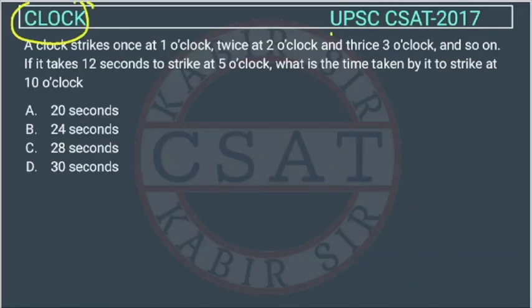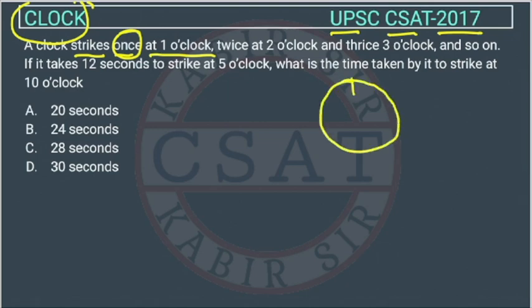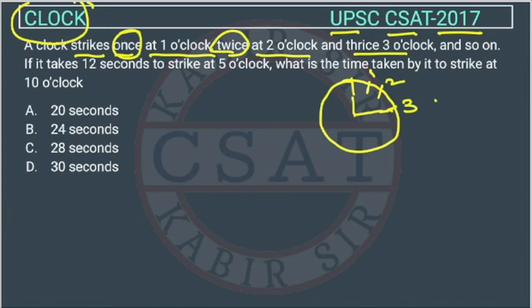This is a question from the clock chapter asked by UPSC in the CSET exam of 2017. A clock strikes once at 1 o'clock. So at 1 o'clock, suppose this is 12, this is 1, this is 2 and this is 3. So here at 1 it strikes once, twice at 2 o'clock, and thrice at 3 o'clock, and so on.